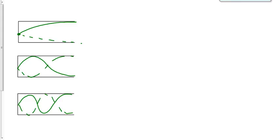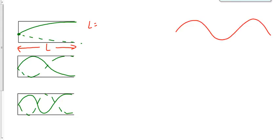Now we'll derive equations just like we did for the string. Setting the length of the air column equal to L, we identify how much of a wave we have in each case. In the first case, going from node to antinode — that's a quarter of a wave. We're going from the equilibrium up to the top of a crest; to get a full wave you'd go down to equilibrium, down to a trough, and back up. So this is a quarter of a wave, and we say L equals one-quarter lambda. Last time for the string it was one-half lambda, but our picture looked different.